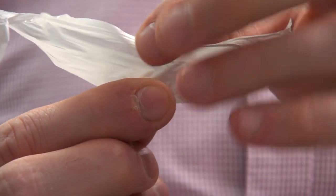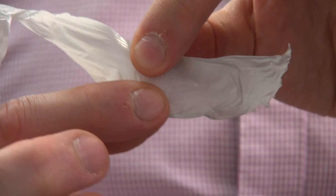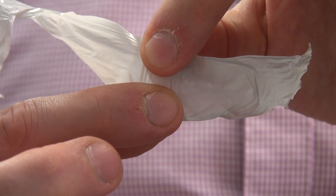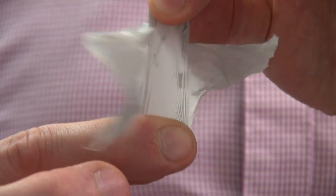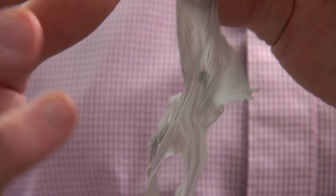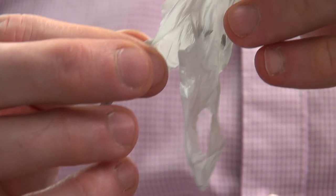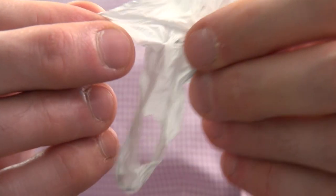So if I take this now and I stretch it vertically, perpendicular to what we know is the molecular orientation. Look at that. It stretches so easily because we're overcoming, in fact, you can see it tearing there because we're overcoming these weaker secondary interactions between the molecules.